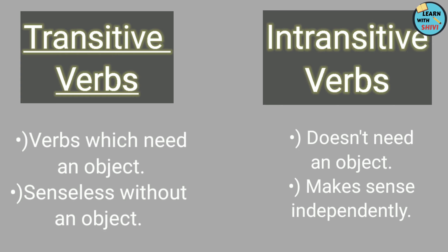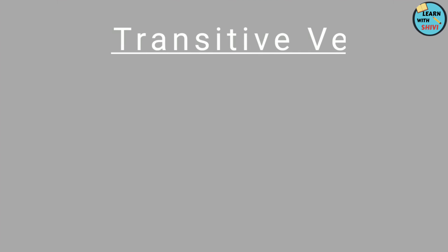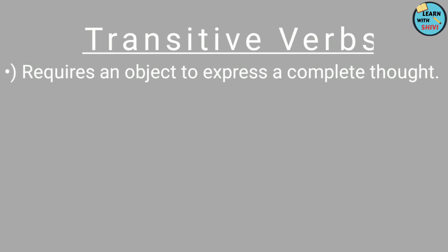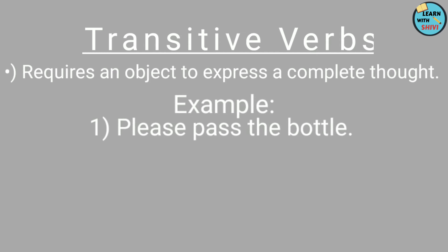Now let's try and understand both transitive and intransitive verbs with the help of examples. Let's have a look at transitive verbs first. As we already know, transitive verbs require an object to express a complete thought. If I remove the object from the sentence — 'Please pass' — will it make any sense? Will it be a complete sentence? No. Hence, this verb requires an object, which is 'the bottle'. Thus, 'pass' becomes a transitive verb.